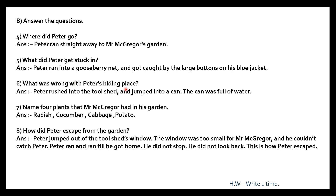Question 6: What was wrong with Peter's hiding place? Answer: Peter rushed into the tool shed and jumped into a can. The can was full of water. Once again — what was wrong with Peter's hiding place? Peter rushed into the tool shed and jumped into a can. The can was full of water.